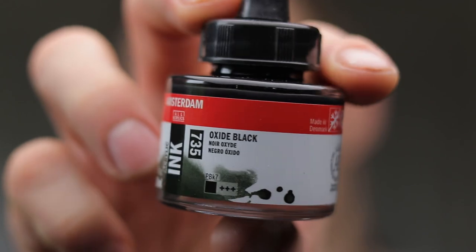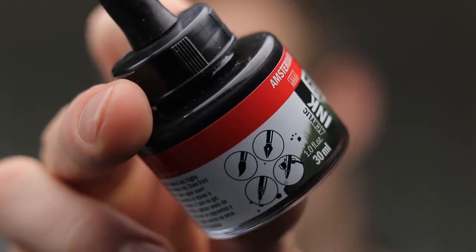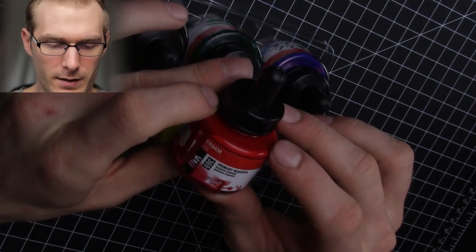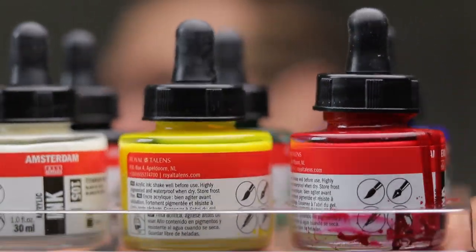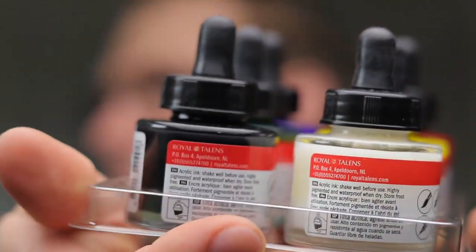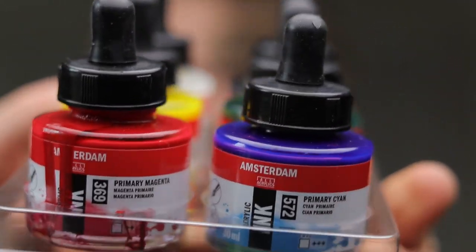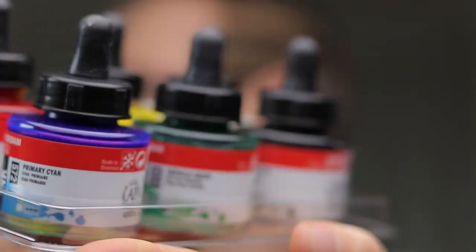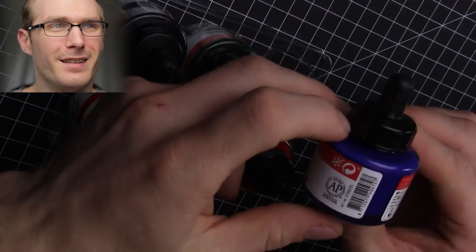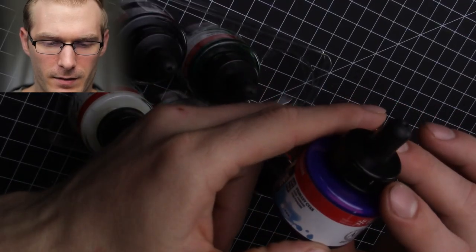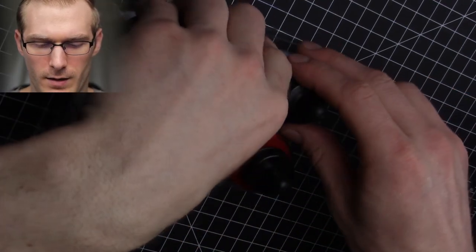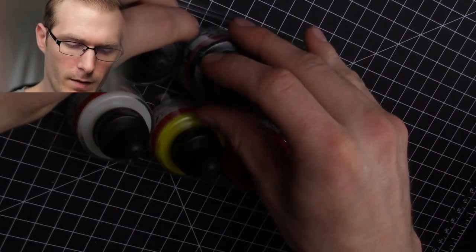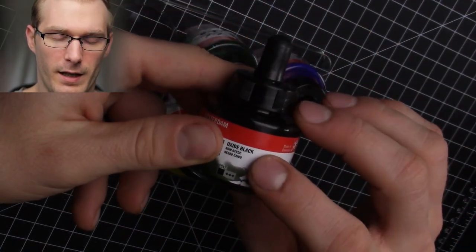Now let me go back to the colors again real quick. This one is a primary magenta which would be the red, the yellow is a primary yellow. The white is a titanium white and this one, well it looks like, looks kind of like a purple but it says primary cyan. And then this one is an emerald green and this one is an oxide black.